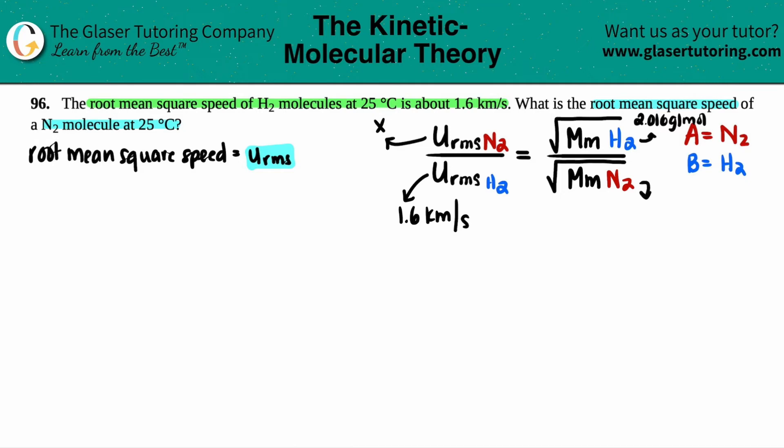And then, if we do N2, 14.01 times 2, you get 28.02 grams per mole. And those are the numbers on the periodic table. So, let's just plug it in.